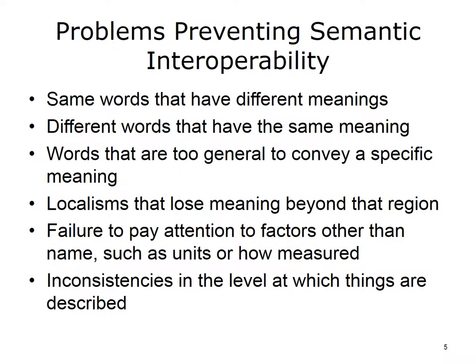There are many problems that prevent us from achieving semantic interoperability: same words that have different meanings; different words that have the same meaning; words that are too general to convey a specific meaning; localisms that lose meaning beyond that region; failure to pay attention to factors other than name, such as units or how measured; and inconsistencies in the level at which things are described.